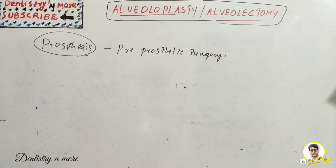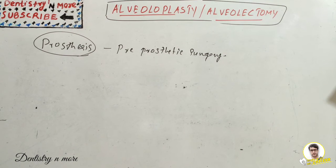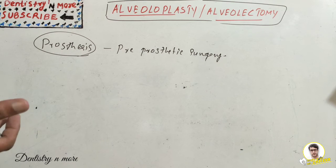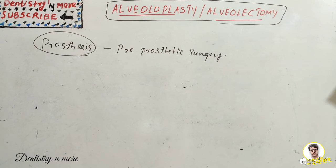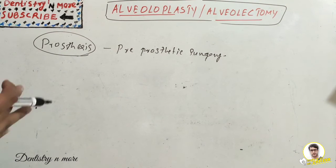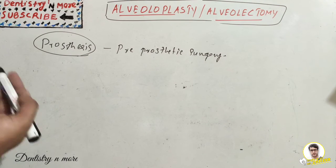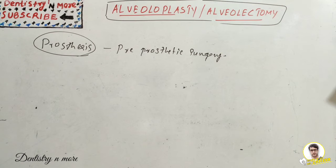What are the basic aims of pre-prosthetic surgery? That is: to provide adequate bony support for the new denture, similarly soft tissue support, optimal vestibular depth, elimination of any bony deformities like tori, prominent mylohyoid ridge, or genial tubercle, or even to correct the maxillary and mandibular ridge relationship.